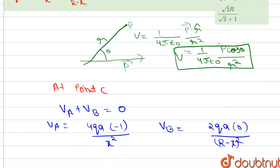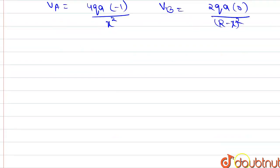Now we put the values of V_A and V_B in the equation: minus 4qa over x squared equals 2qa over (r minus x) squared. Then we solve this.